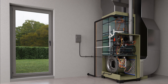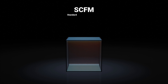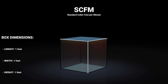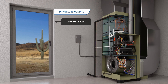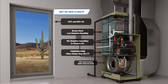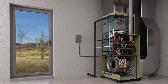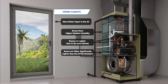Even in a case where someone is shooting for a CFM target of 400, the actual cubic feet per minute, or ACFM, may need to differ slightly because the air may be heavier or lighter than the standard SCFM. SCFM refers to the CFM of a 1-foot by 1-foot by 1-foot box of air at 68.3 degrees Fahrenheit and 0% relative humidity. In a dry or arid climate where we have hot, dry air, those boxes of air will have a low relative humidity, close to the 0% RH of SCFM, but they will often be hotter than 68.3 degrees, so you really could have a target of more than 400 ACFM. In humid climates, the air will contain a lot more water vapor — and because water vapor is lighter than nitrogen and oxygen, these boxes of air will be lighter than in the arid climate and significantly lighter than the SCFM standard in many cases.